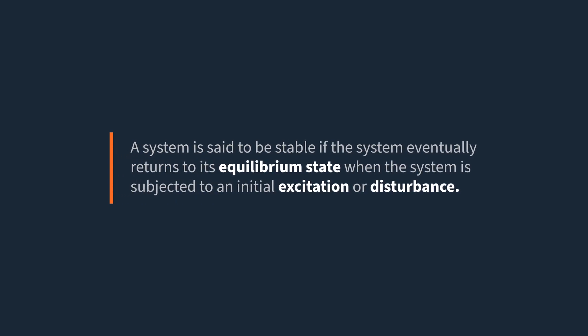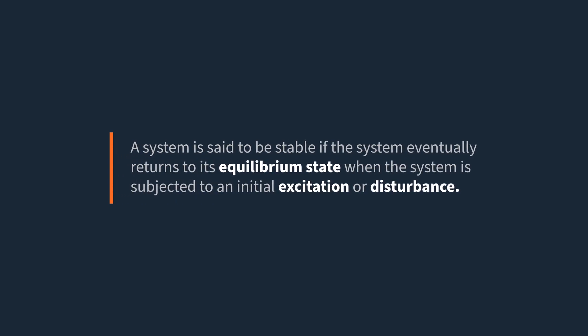Let's start with the book definition first. A system is said to be stable if the system eventually returns to its equilibrium state when the system is subjected to an initial excitation or disturbance. The inverse is also true: if the response of a system diverges without bound from its equilibrium state upon excitation, then it is unstable.